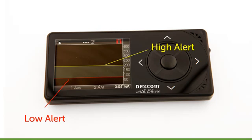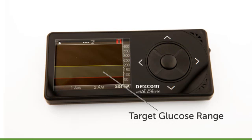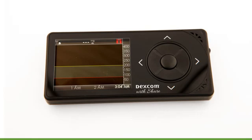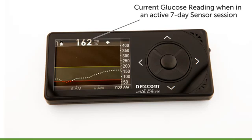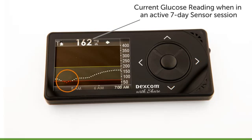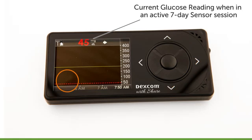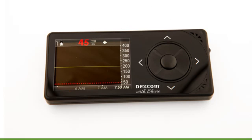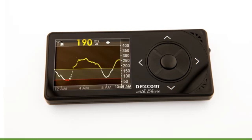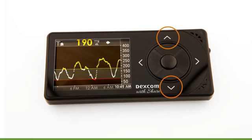You will also see the following on your trend graphs: a gray zone that highlights your target glucose range. The size of your gray zone will depend on your high and low glucose alert settings. Your glucose reading has a numerical value when you are in an active sensor session — once you have started your 7-day sensor session. This number will be white if it's in your target glucose range, red if it's low based on your settings, and yellow if it's high. The dots on your trend graph will also change color based on your low and high alert settings. Note: if your low glucose alert is not set and your glucose level is 55 mg per deciliter or lower, your glucose value will be red. You can view your past glucose information through the 1, 3, 6, 12, and 24-hour trend graphs by pressing the up or down buttons.